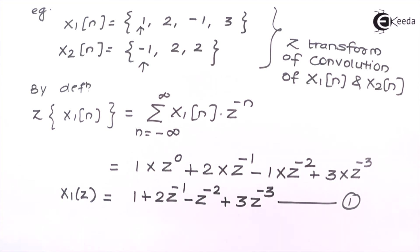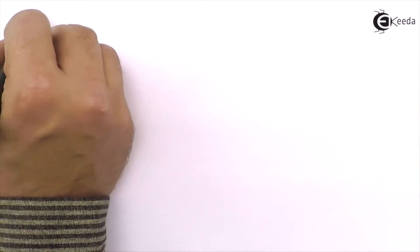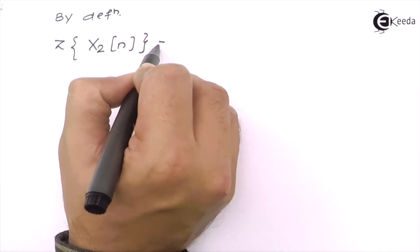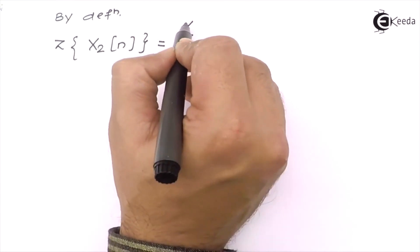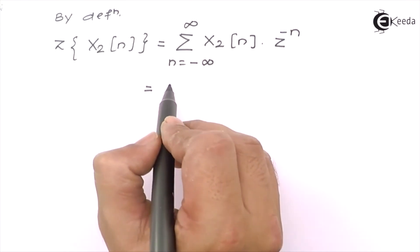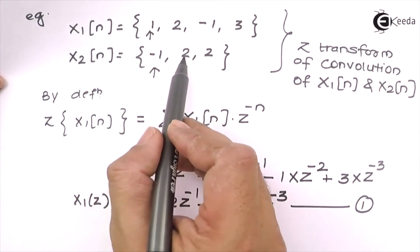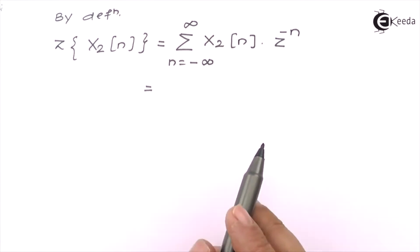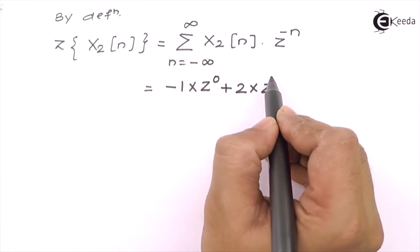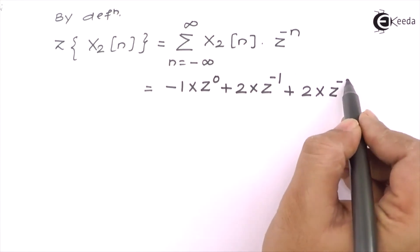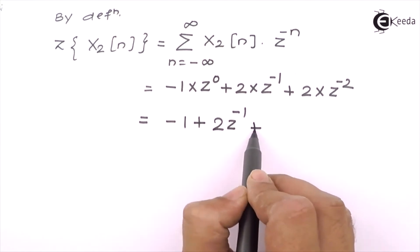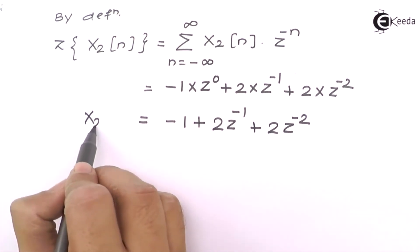Now let's find the Z transform of the second signal. By definition, the Z transform of X2[N] is the summation where n varies from minus infinity to infinity of X2[N] times Z raised to minus N. Starting from n=0 up to n=2, we get (-1)·Z⁰ + 2·Z⁻¹ + 2·Z⁻², which simplifies to X2(Z) = -1 + 2z⁻¹ + 2z⁻².